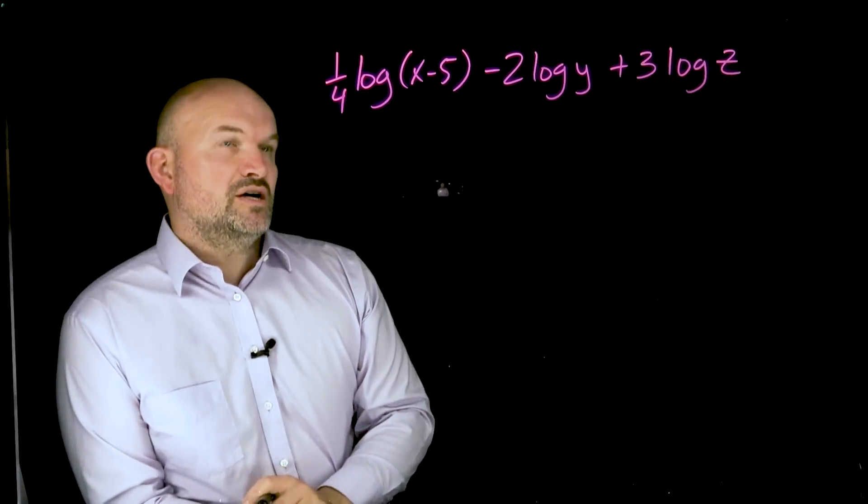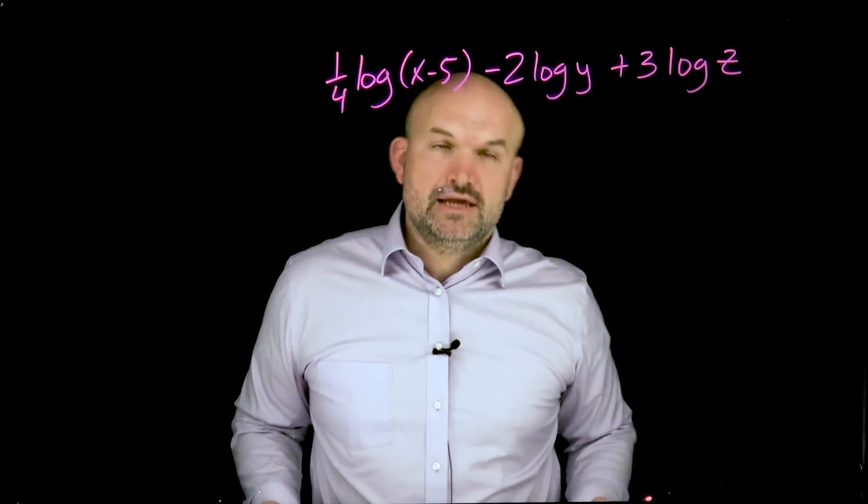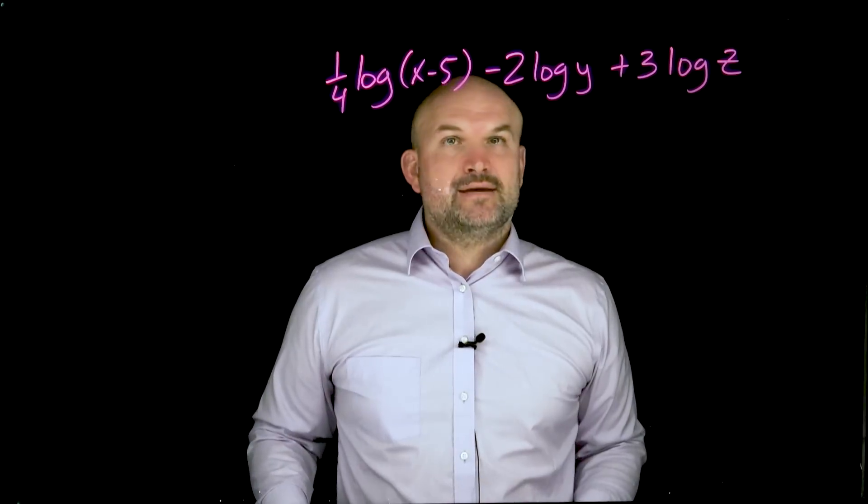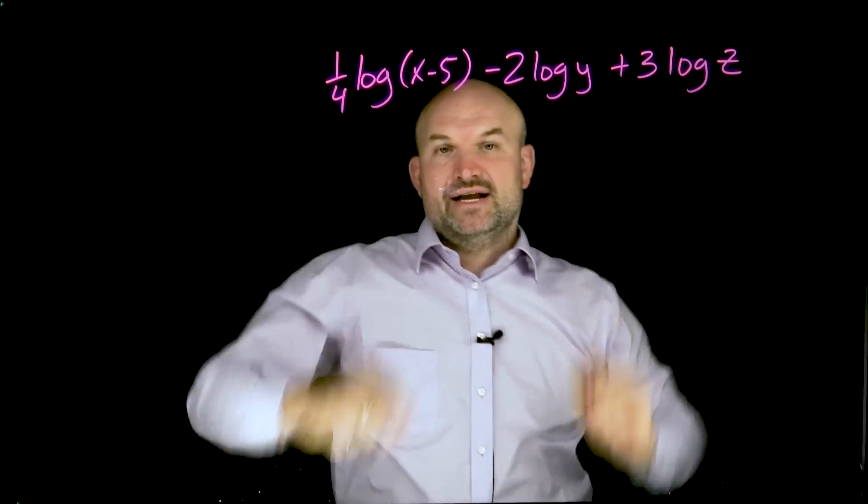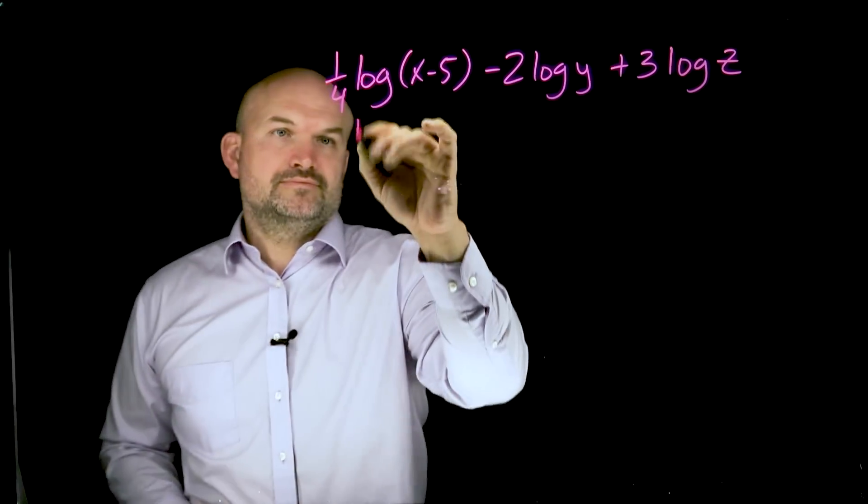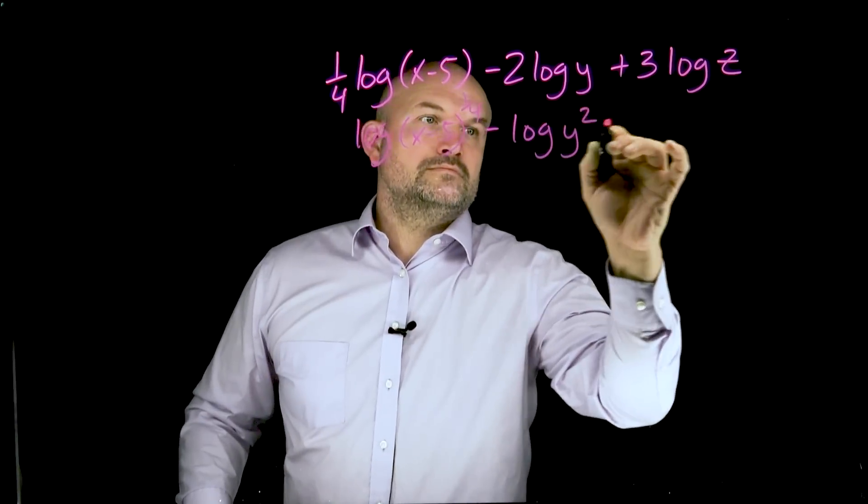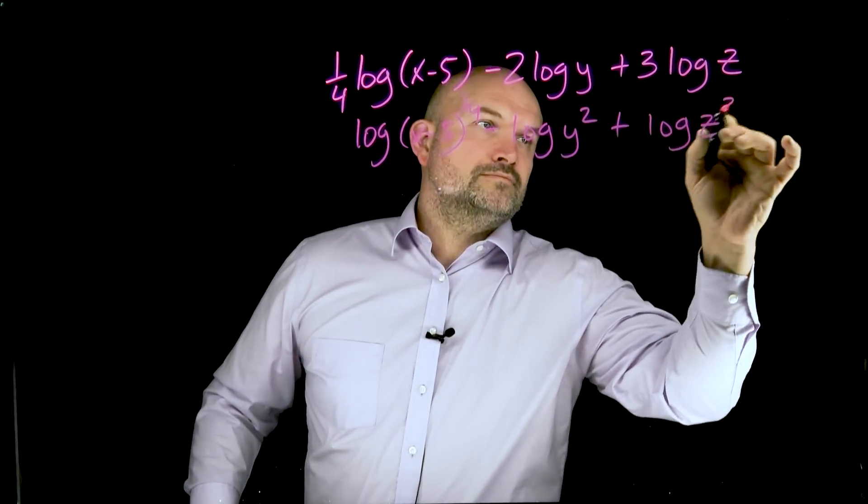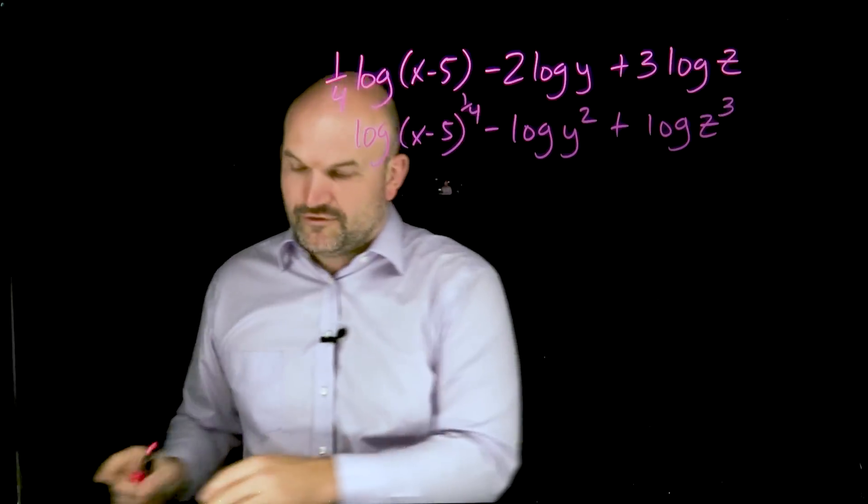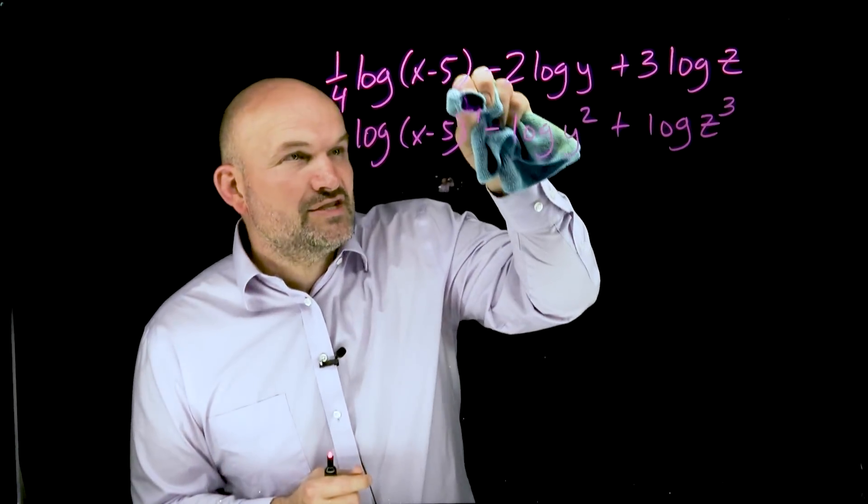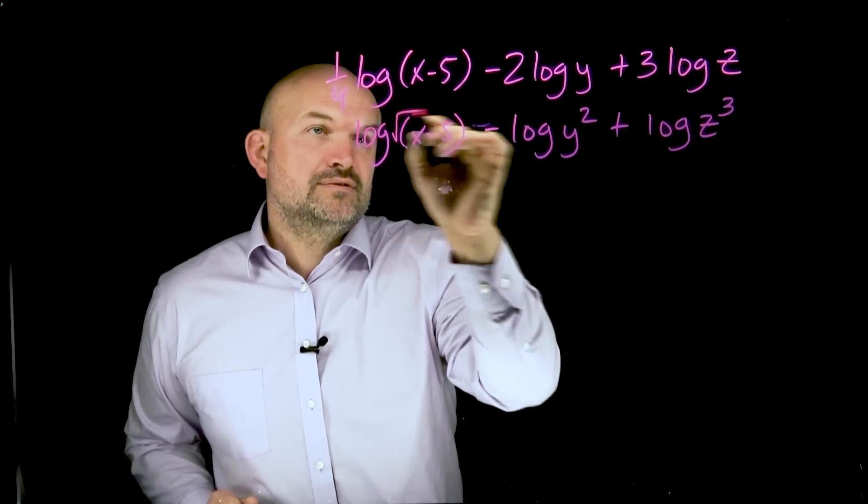We have one fourth log of x minus five minus two log of y plus three log of z. So the first thing I'm actually going to do is I'm going to take all my powers that I have in front of each of my logarithms, and I'm going to rewrite them as powers. I recognize this as x minus five to the one fourth power. Rather than rewriting that as to the one fourth power, I'm going to rewrite that as the fourth root.